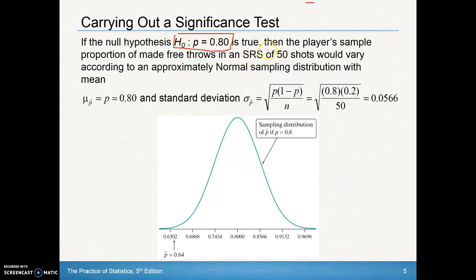We see that the player's sample proportion of made shots in SRS would vary according to approximately normal sampling distribution with mean. So again, the mean of many sample distributions should be equal to the true population proportion of 0.8 in our case.